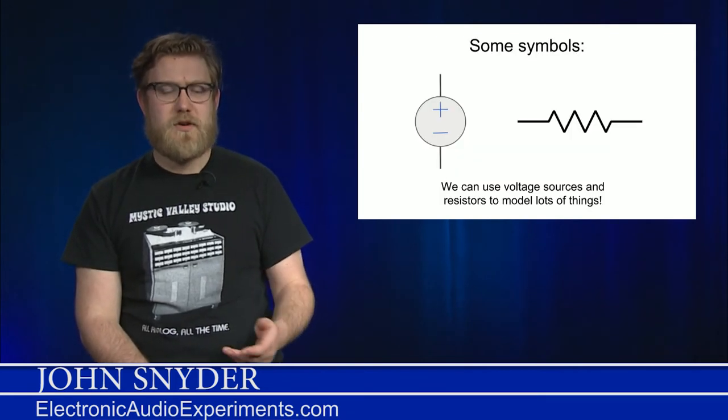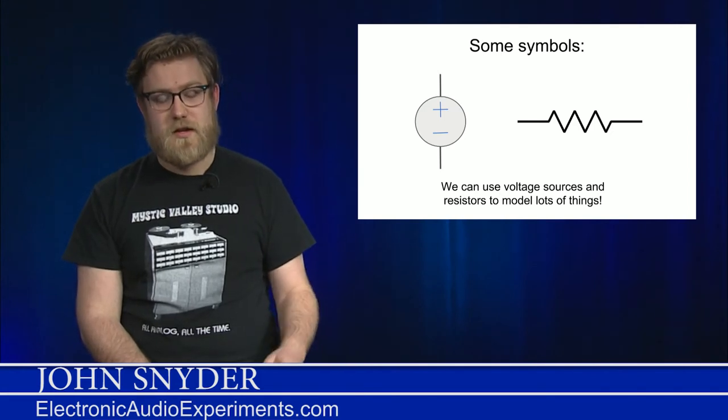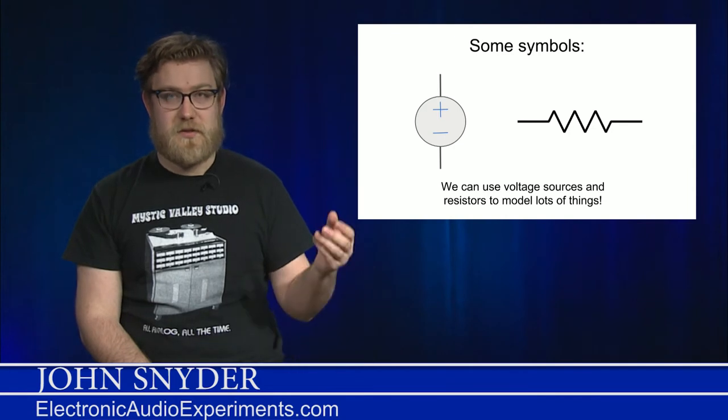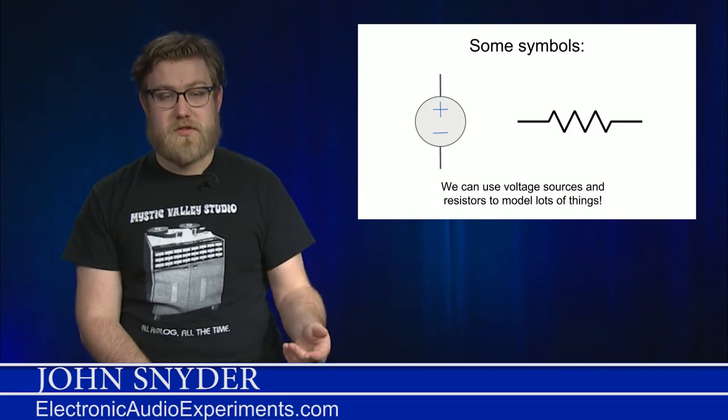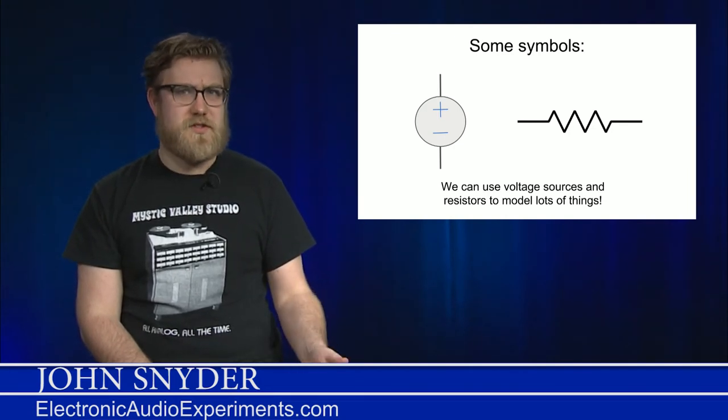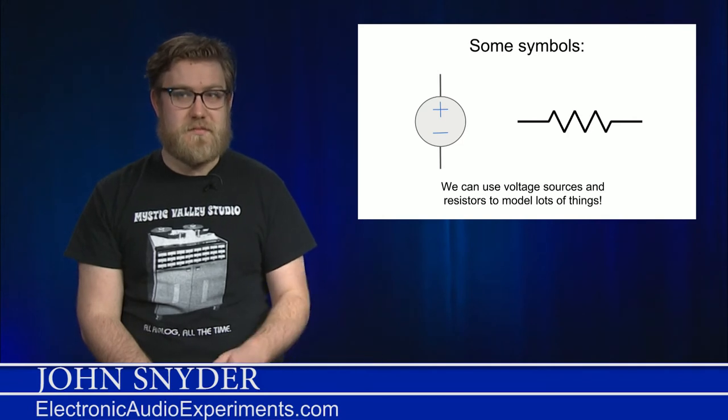When we draw electrical schematics, there are a whole bunch of symbols we can use. Here are two very basic ones. One is simply a voltage. You can see the plus and minus terminal. And the other is a resistor. We can use voltage sources and resistors to model all sorts of things.